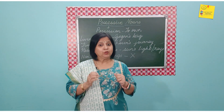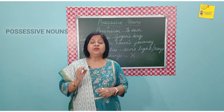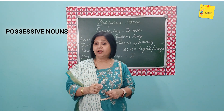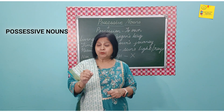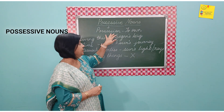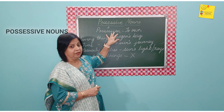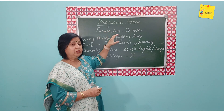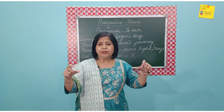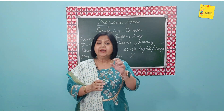Hello everyone. Our topic for today is possessive nouns. Possessive nouns comes from the word possessive, and possessive means to possess something, or we say to own something. So when we talk about owning something, instead of writing it in a big way, we shorten it and we use an apostrophe to just write down that particular possession.